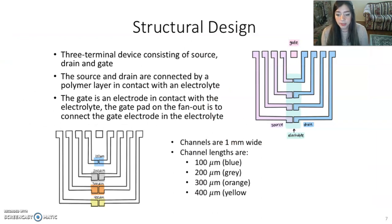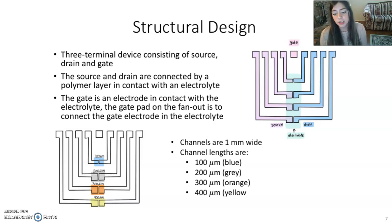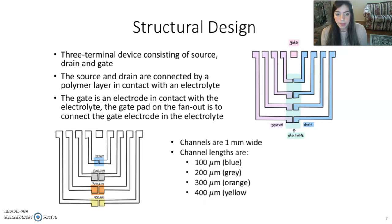The structure of the OECT is comprised of three terminals: the source, drain, and gate. The source and drain are connected by a polymer layer which is in contact with the electrolyte. The electrode is another fundamental component because it is in contact with the gate and submerged in the electrolyte. The source, drain, and gate components are standard across all devices, but the fabrication and design of the plating will vary. In my research, I dealt with a mask design comprised of four different channels all varying in length from 100 to 400 micrometers for linear scaling.